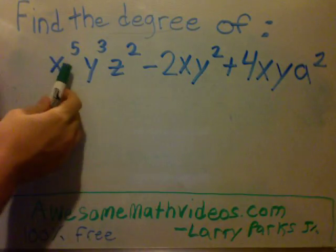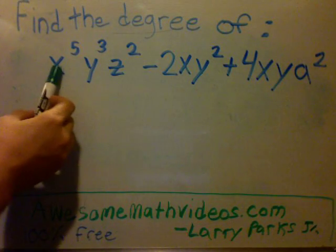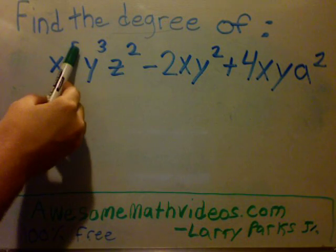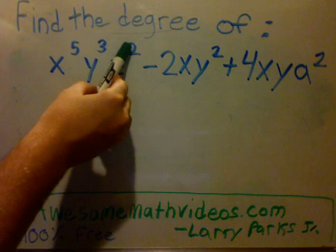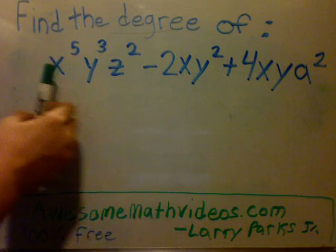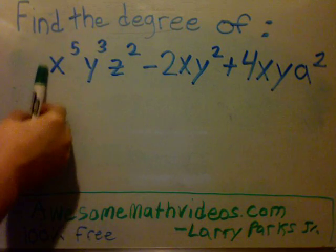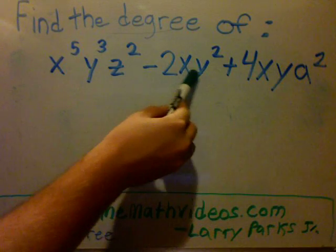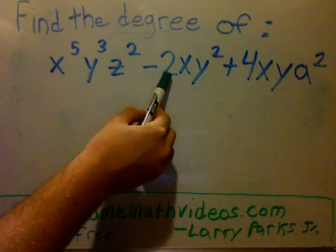What you do is you look right here and the letters are what we call variables. These on top are exponents and any number, in this case there's not one so it's like a one, any number in front of the variables is your coefficient.